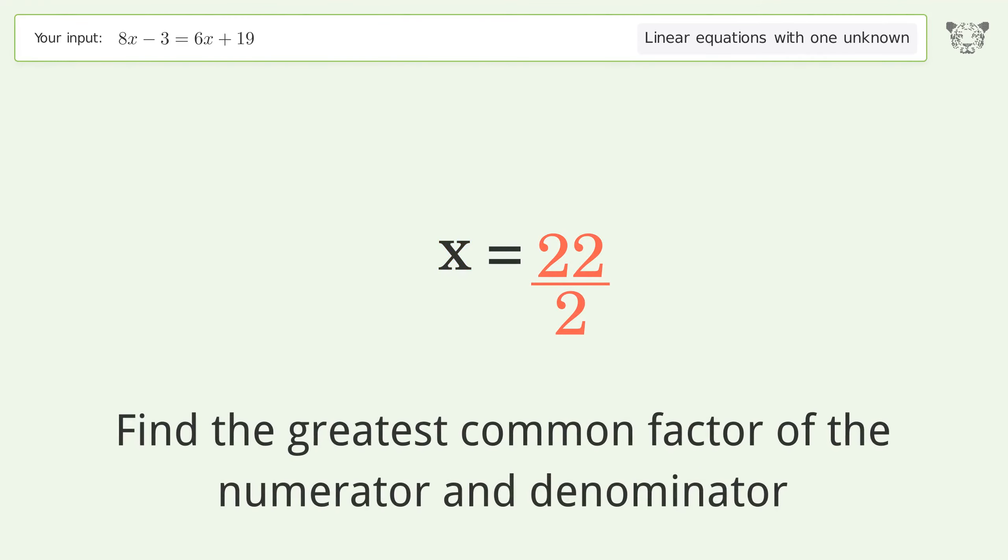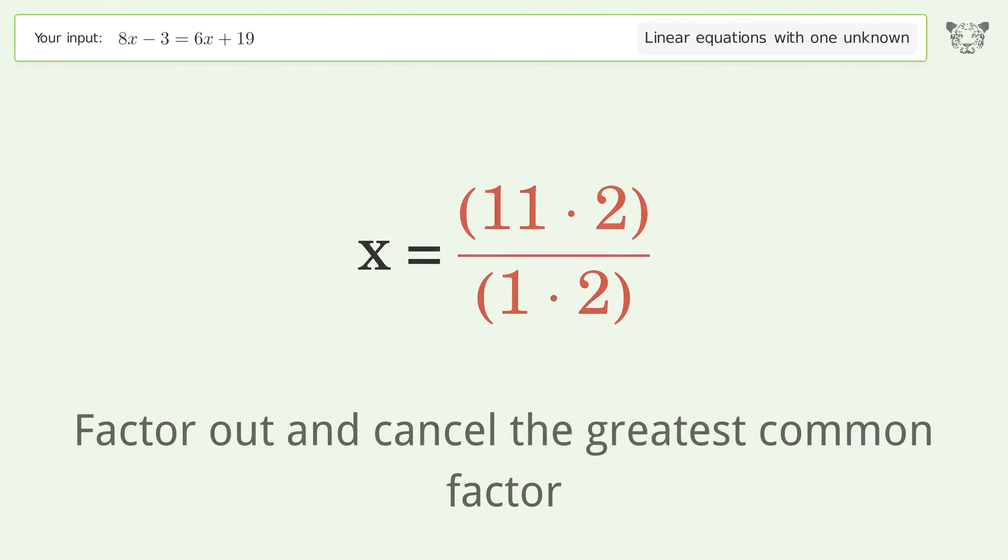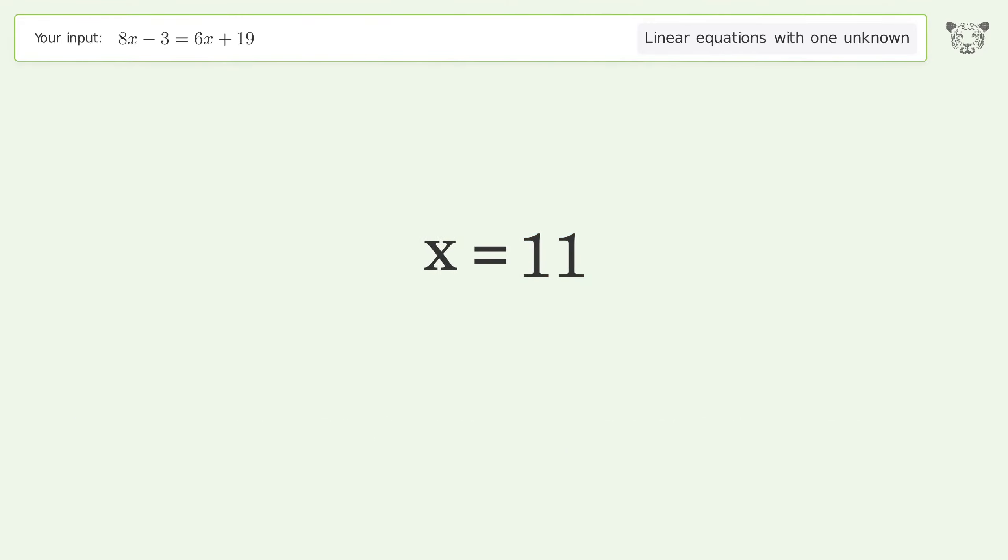Find the greatest common factor of the numerator and denominator. Factor out and cancel the greatest common factor. And so the final result is x equals 11.